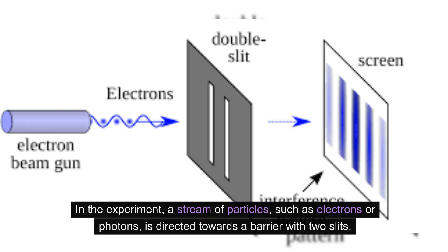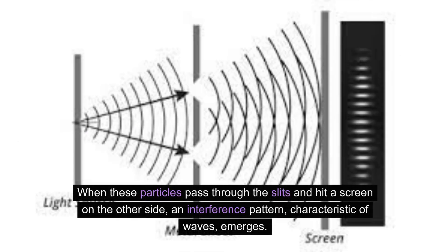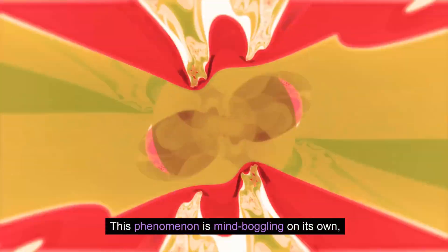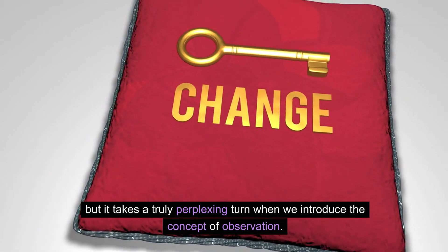In the experiment, a stream of particles, such as electrons or photons, is directed towards a barrier with two slits. When these particles pass through the slits and hit a screen on the other side, an interference pattern, characteristic of waves, emerges. This phenomenon is mind-boggling on its own, but it takes a truly perplexing turn when we introduce the concept of observation.